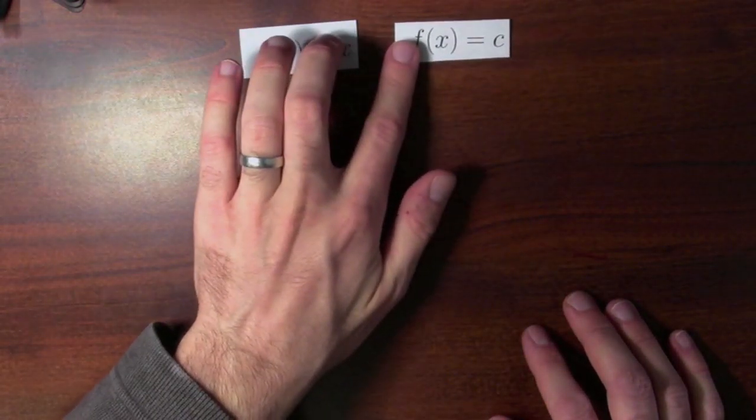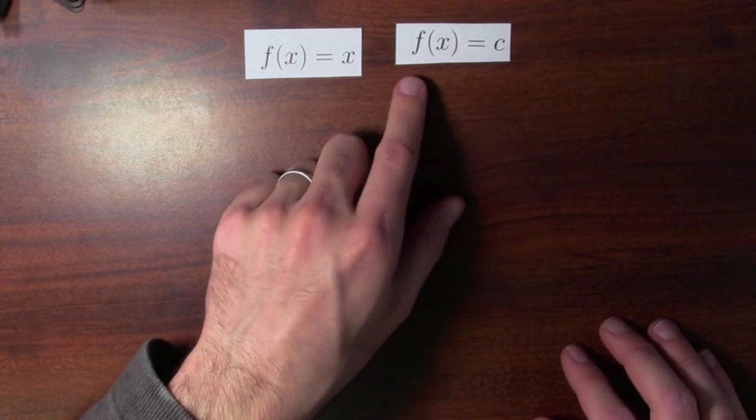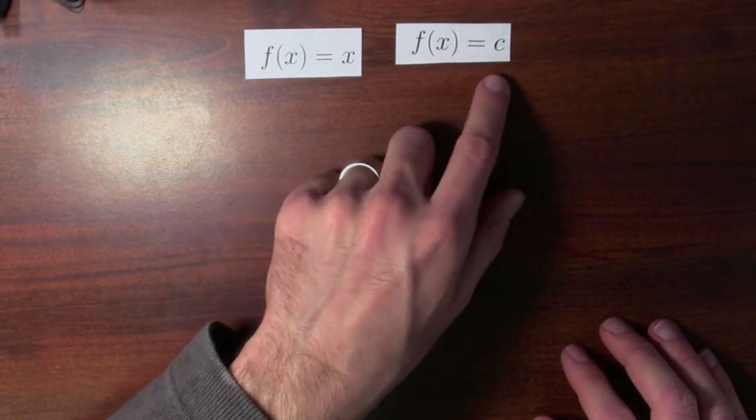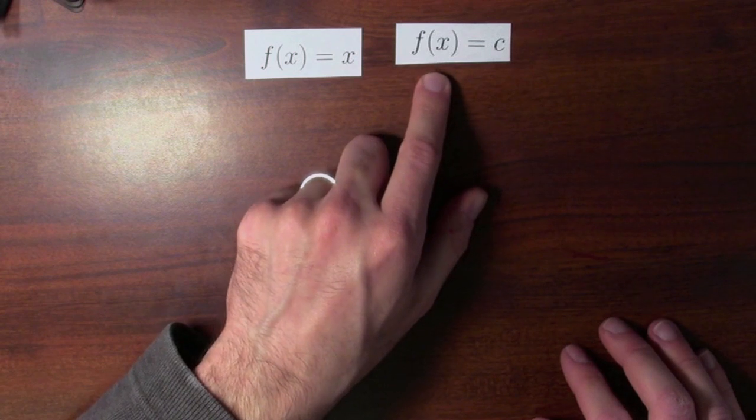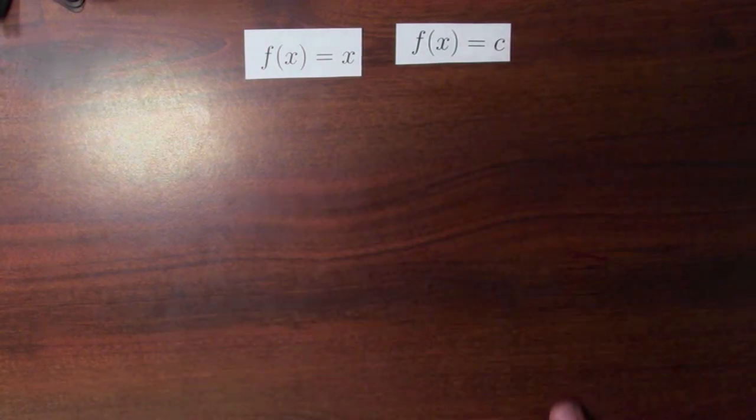Here's another function, a constant function. You pick some number c. C stands for constant. And then you can define this function, f of x equals c. Whatever you plug in for x, f just ignores that and outputs the original value, c.